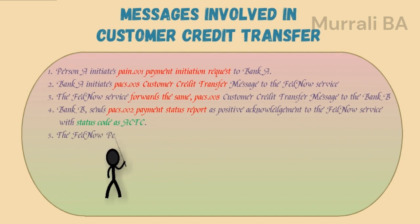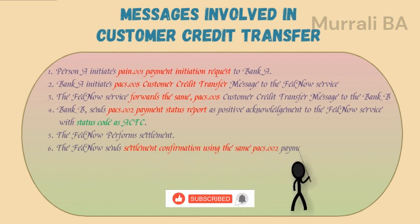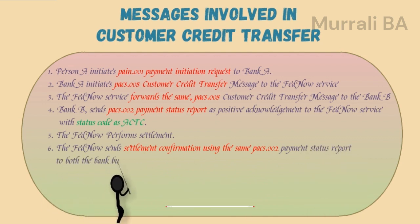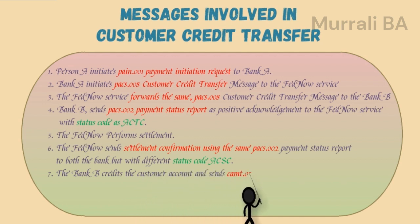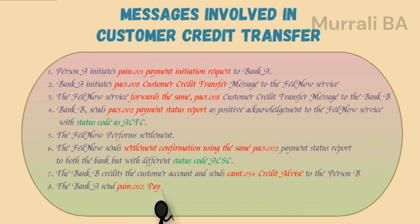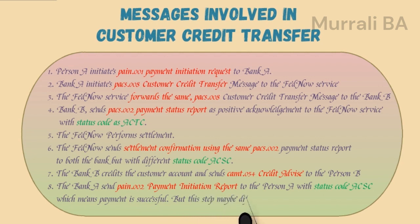Then the FedNow Service performs the settlement. Number six, the FedNow sends the settlement confirmation using the same PACS.002 payment status report to both banks, but this time using the different status code ACSC, which means accepted and settlement completed. Then step seven, bank B credits the customer account and sends a CAMT.054 credit advice to person B. Finally, number eight, bank A sends the PACS.002 payment status report to person A with status code ACSC, meaning the payment is successful. However, this step may differ from bank to bank.